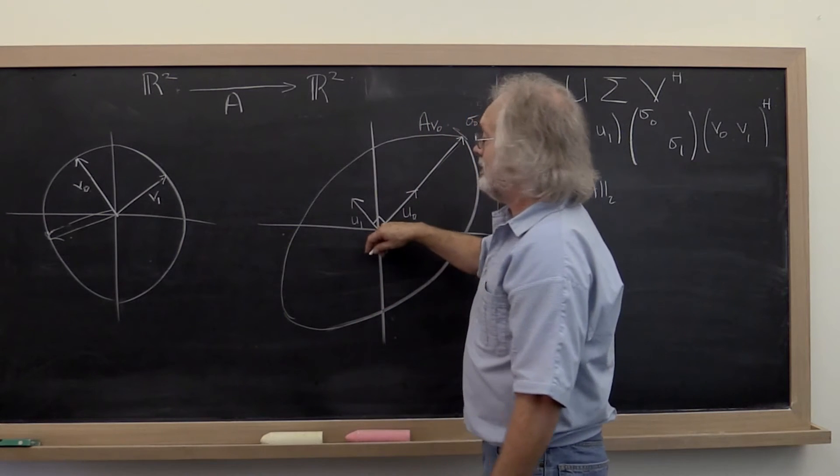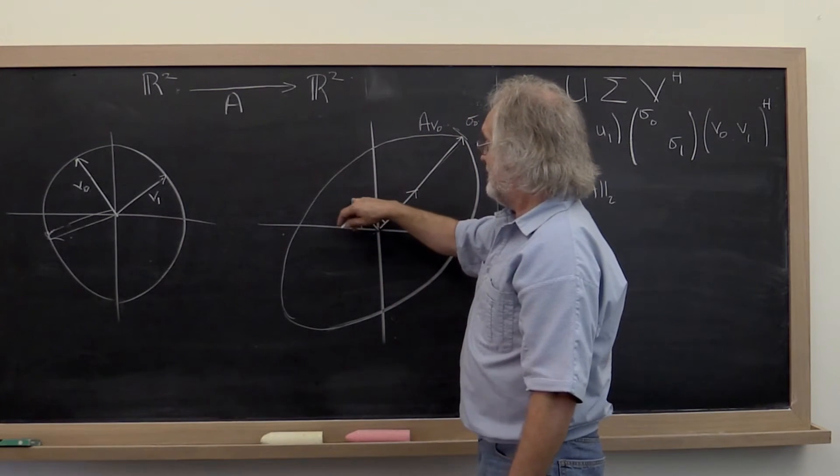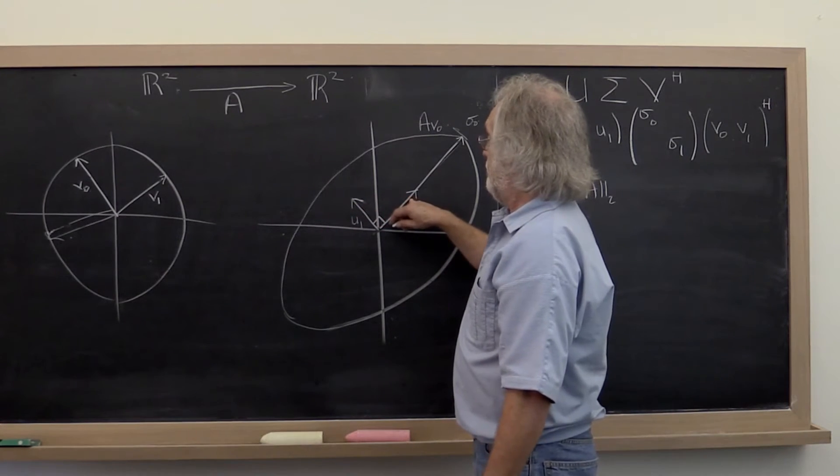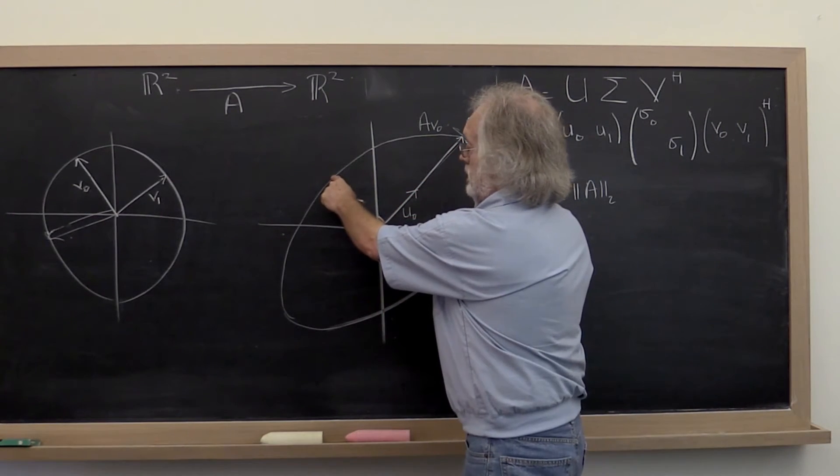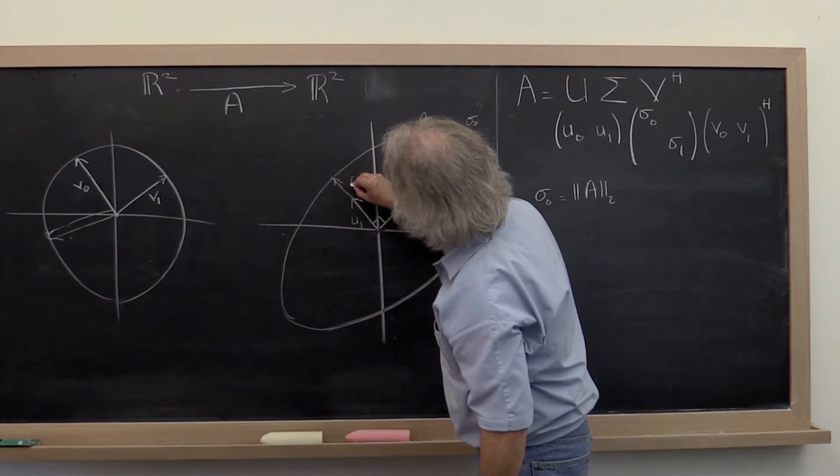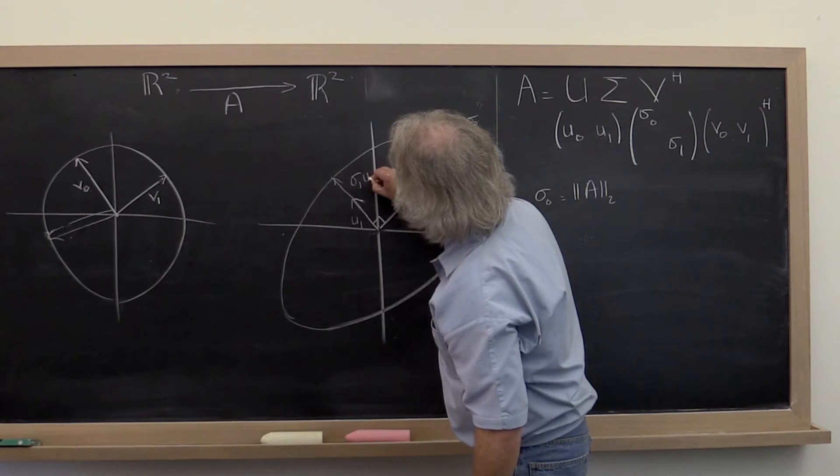And the vector that that then maps to is the same linear combination of this vector and that vector. As a matter of fact, this vector right here is the vector sigma 1 times U1.